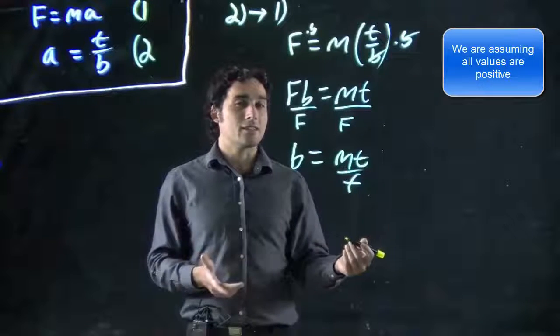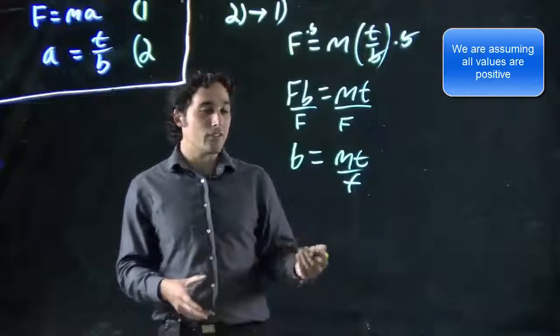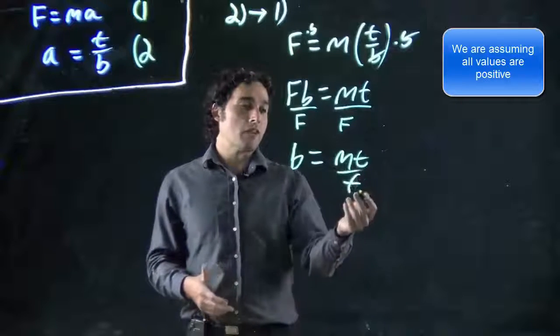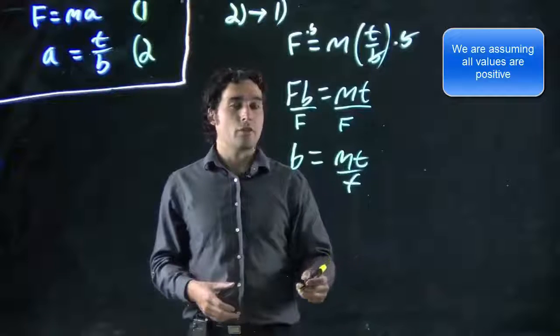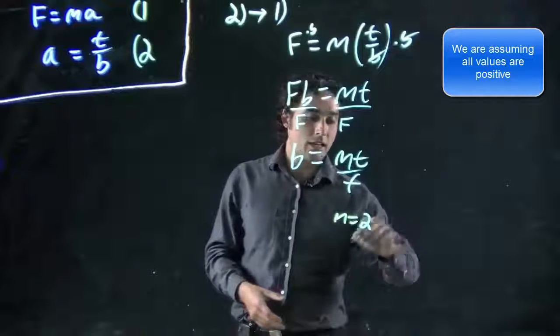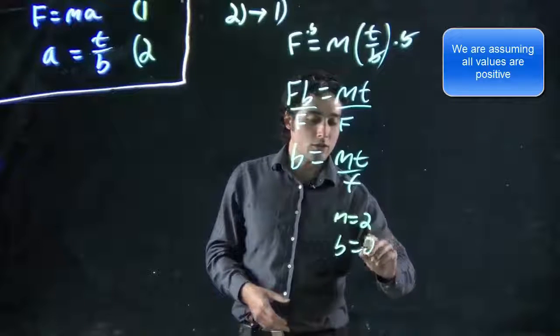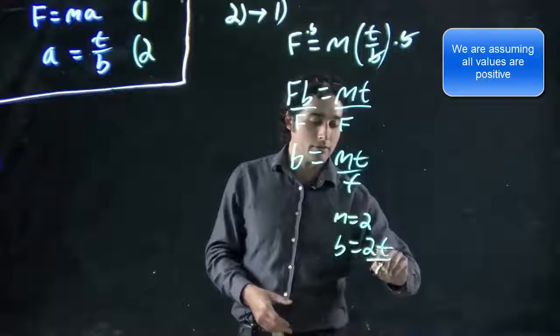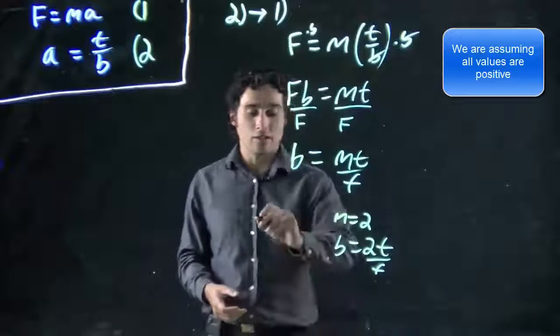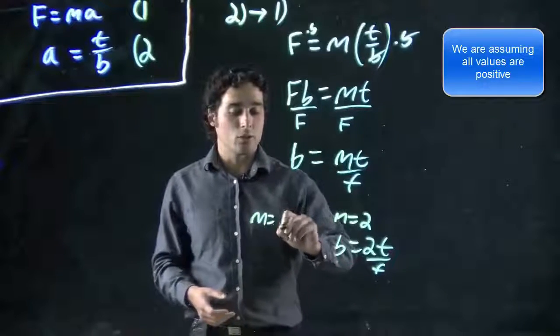In this case, we've already looked at that and it's fairly straightforward. If this was a two, okay, great, it would be two T over F. If it was a four, if I tried M equals two, I'd get B equals two T over F. Last time we actually plugged in values for T and F. We don't necessarily need to. If I try M equals four, B equals four T over F.